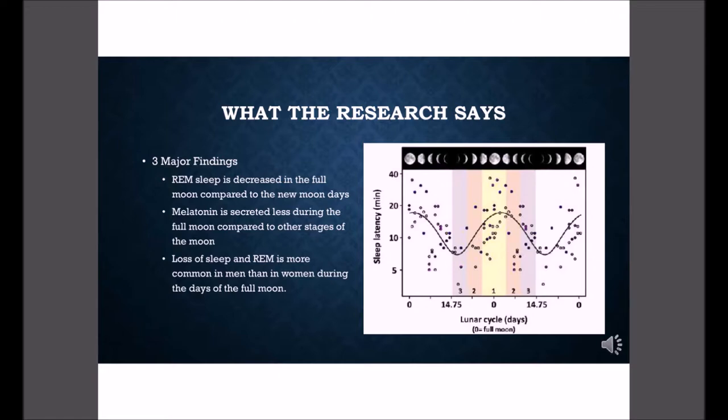Melatonin is also secreted less during the full moon. Melatonin is this hormone that is secreted after sunset so your body is getting rested and ready to sleep. But in the full moon it is less secreted, and it also could be because there's more light outside.